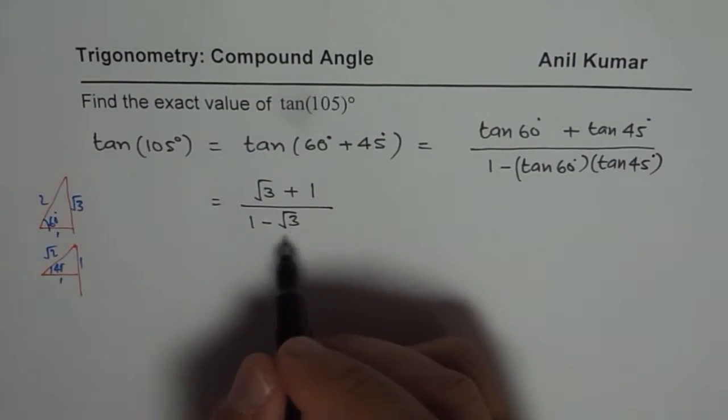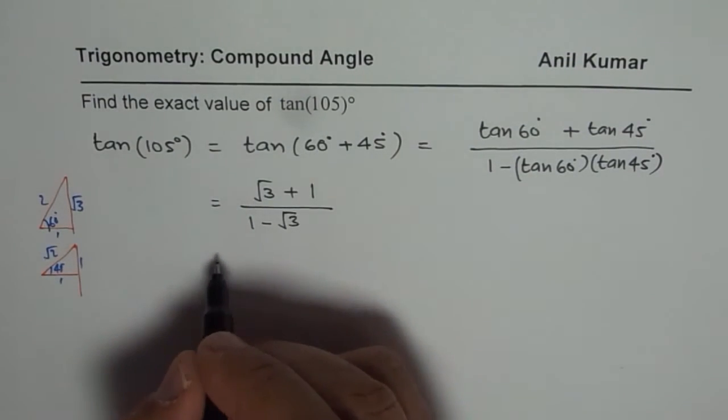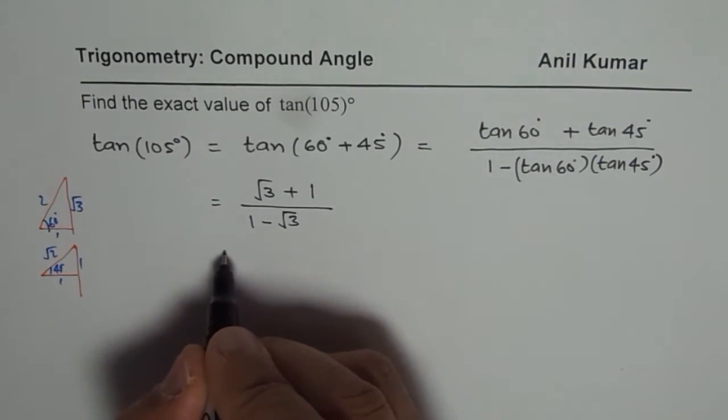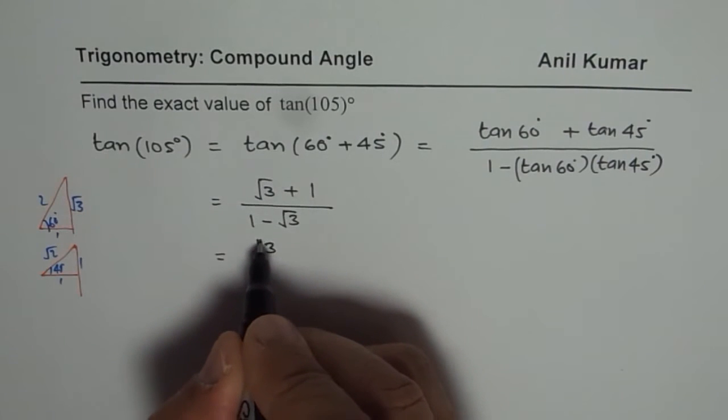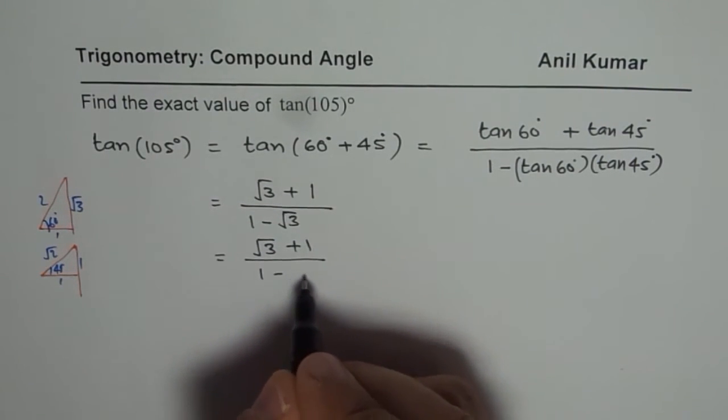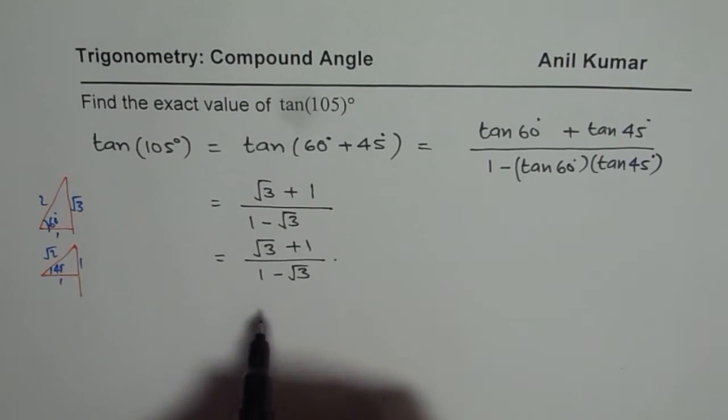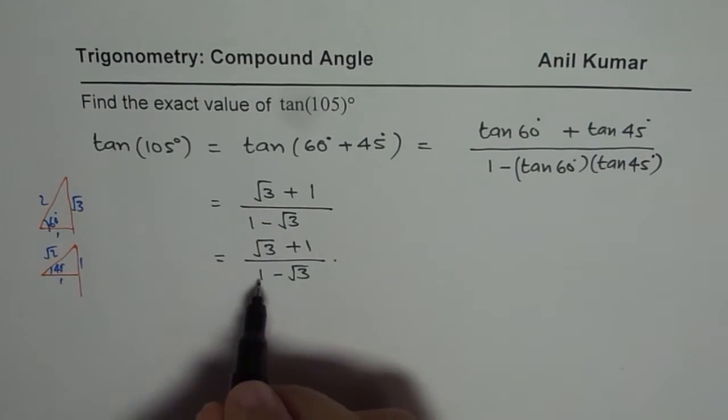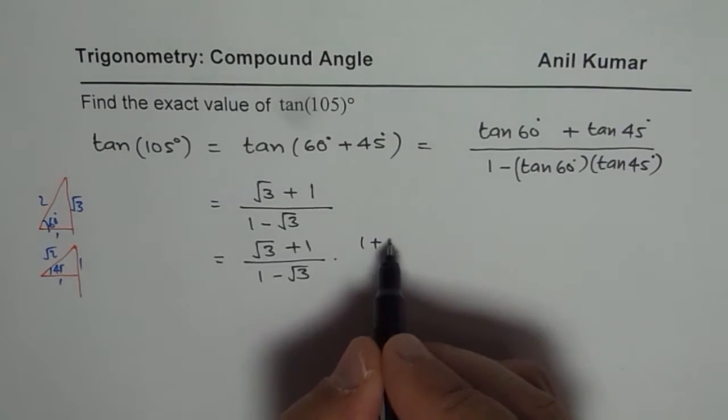Now whenever you get an answer like this, you should rationalize. So let me share with you the technique of rationalization. So it is square root 3 plus 1 divided by 1 minus square root 3. So rationalization means multiplying by this conjugate, which is 1 plus square root 3.